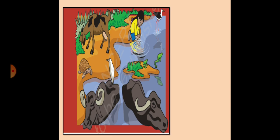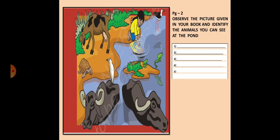The next picture is in page number two. Here again you have to observe the picture given in your book and identify the animals which you can see at the pond. This question was also dealt in the first video.